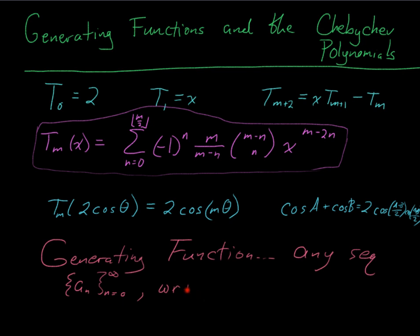The generating function is, you just write down a formal power series. So, let's call it A(T). It is supposed to be sum from zero to infinity of aₘ T to the n.